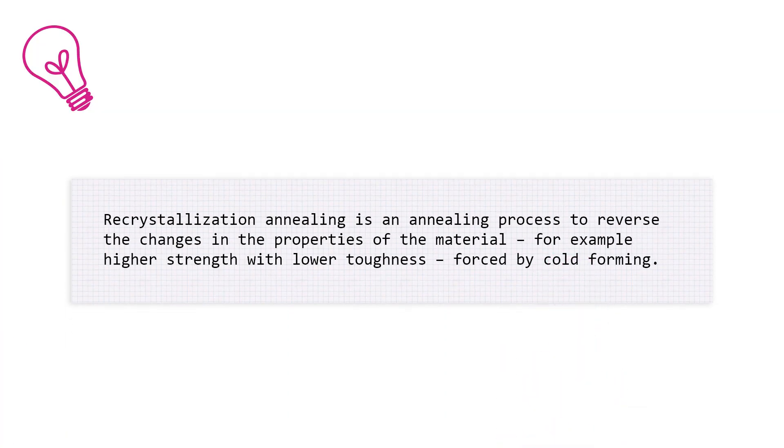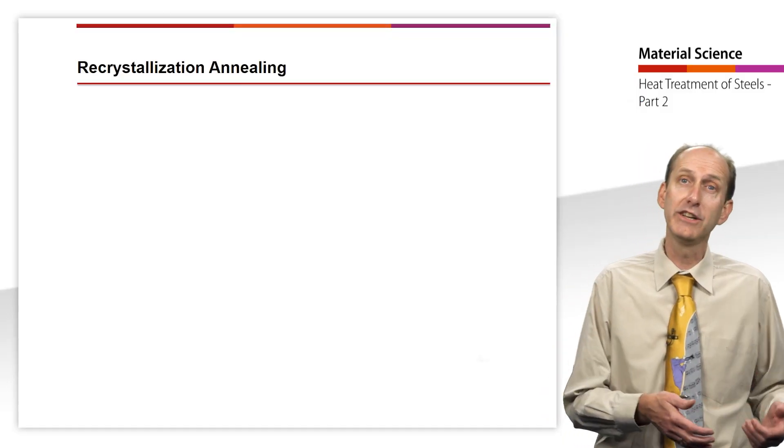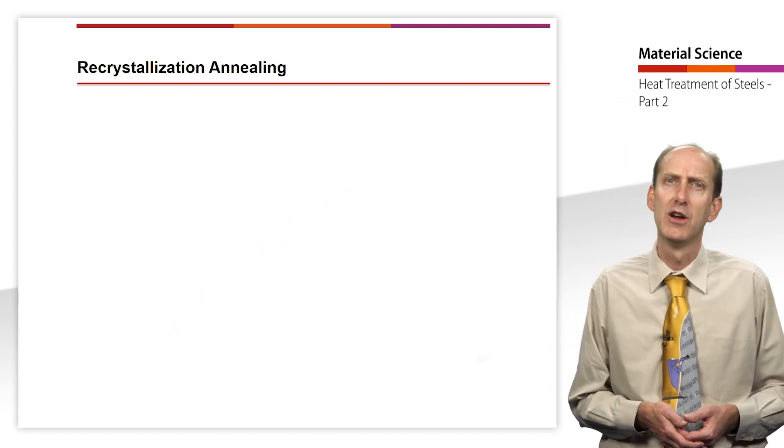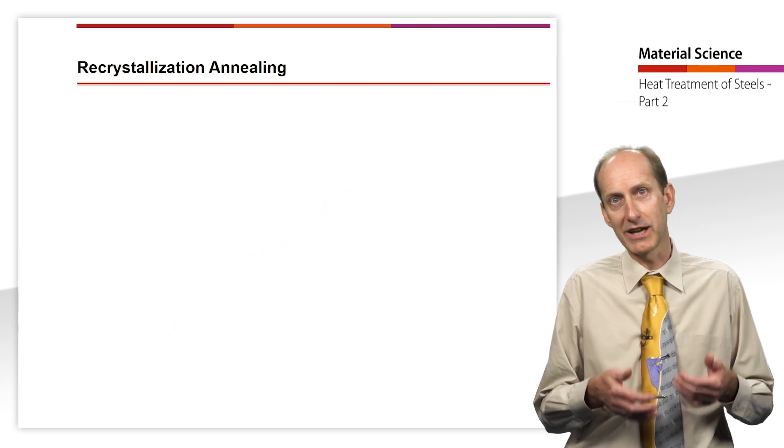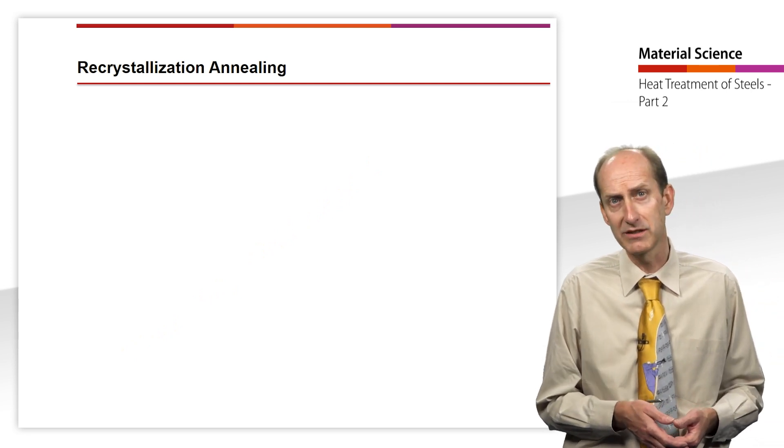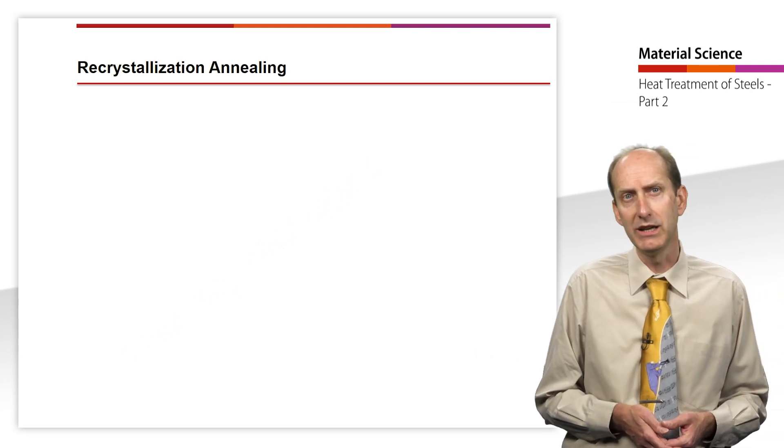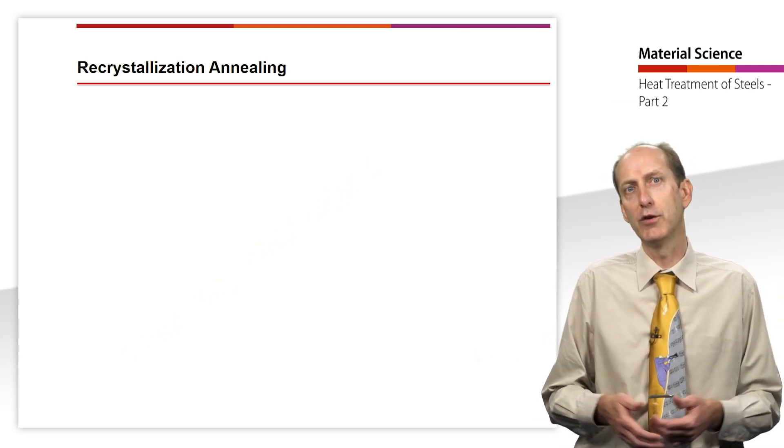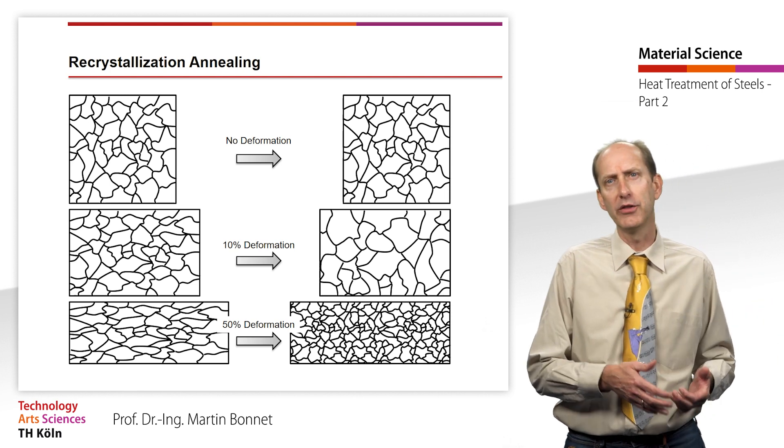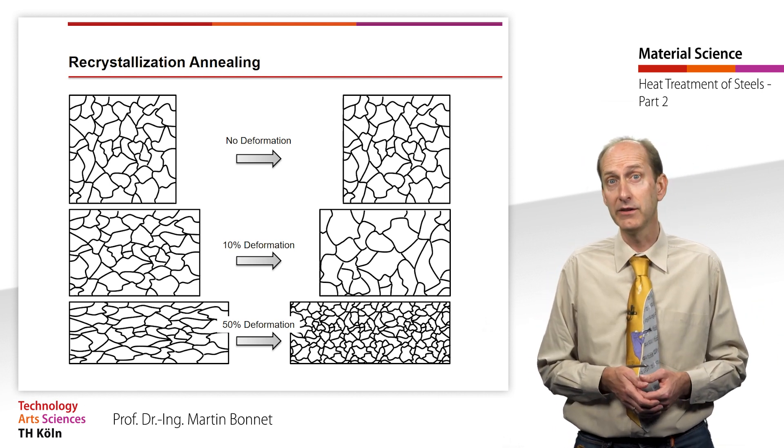Recrystallization annealing is an annealing process to reverse the changes in the properties of the material, for example, higher strength with lower toughness forced by cold forming. I had already talked about this briefly at the end of lattice types and defects when we learned about work hardening via the introduction of dislocations by cold working. In many cases, for example deep drawing operations, recrystallization annealing is required in between to produce the high formability required for further drawing work.